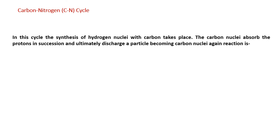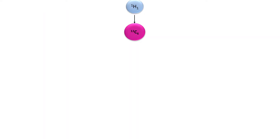Now we will talk about the carbon-nitrogen (CN) cycle. Both the PP cycle and the CN cycle are nuclear fusion reactions. The PP cycle occurs at lower temperatures, while the CN cycle occurs at higher temperatures. In the CN cycle, the synthesis of hydrogen nuclei takes place with a carbon atom — the carbon nucleus absorbs protons and releases particles with higher atomic number and mass number.